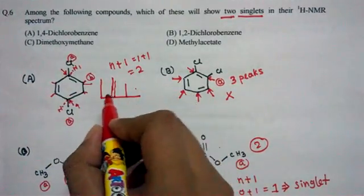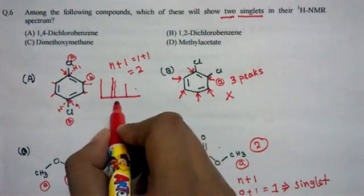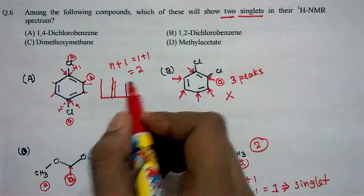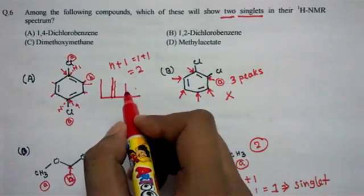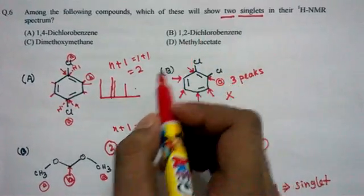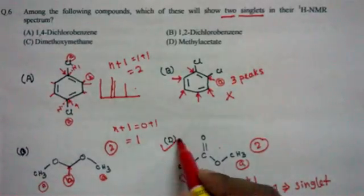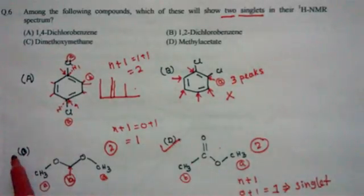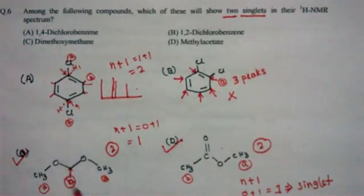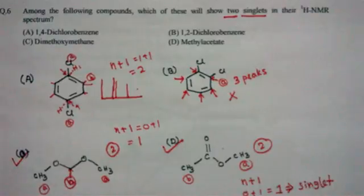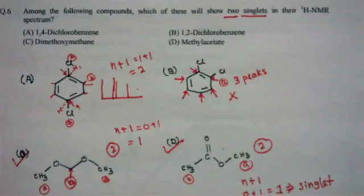So here there are definitely two peaks, but both peaks are doublet, not singlet. Since this is an MSQ question, the correct options are C and D. I hope you enjoyed this video — don't forget to give it a thumbs up and please subscribe. Thank you.